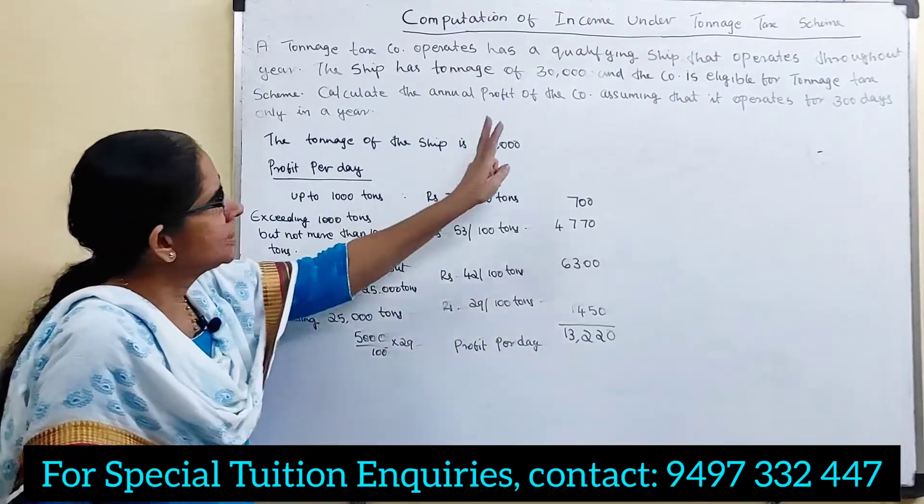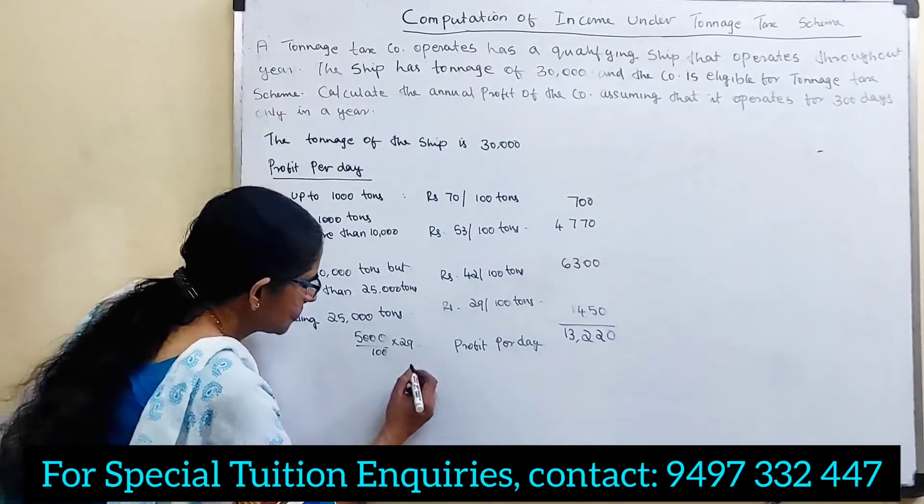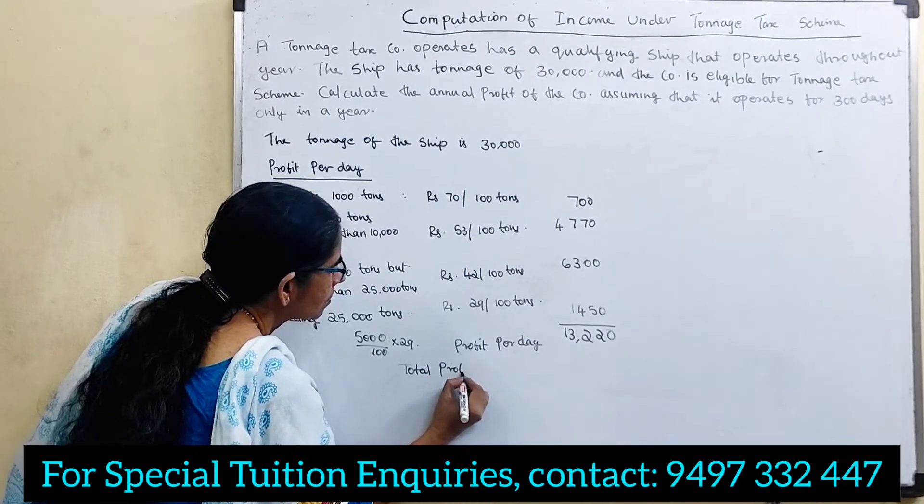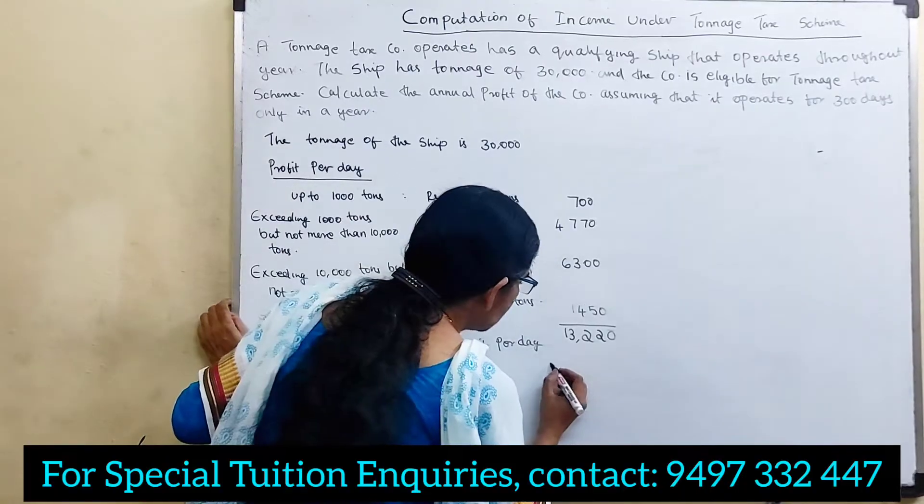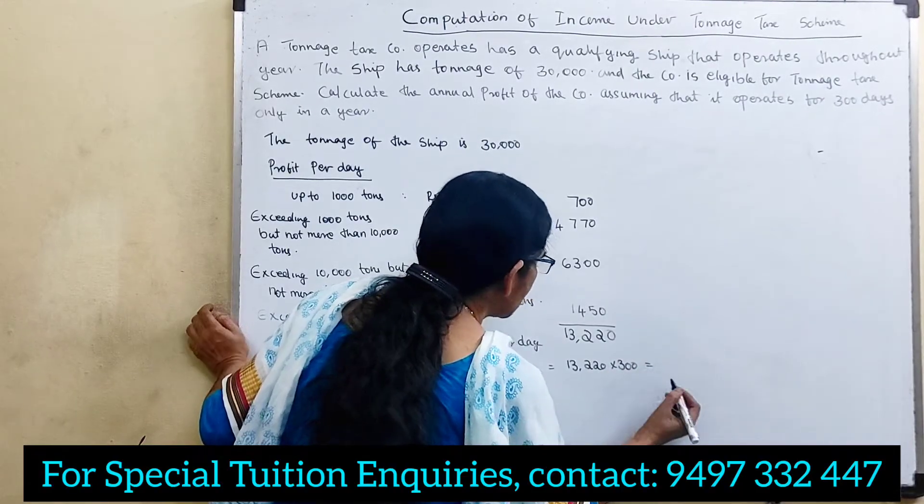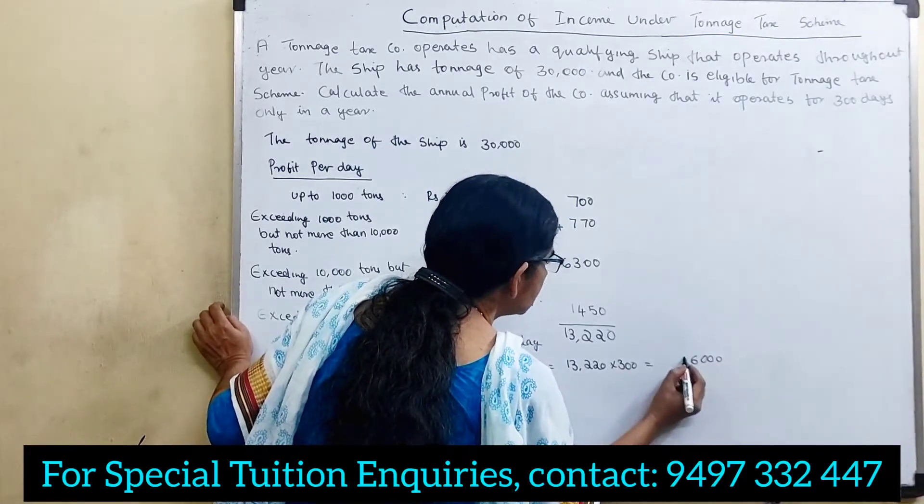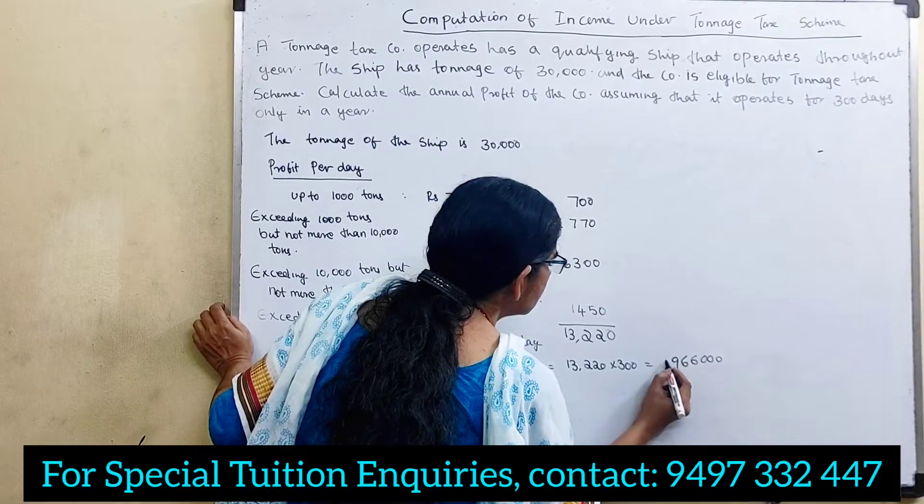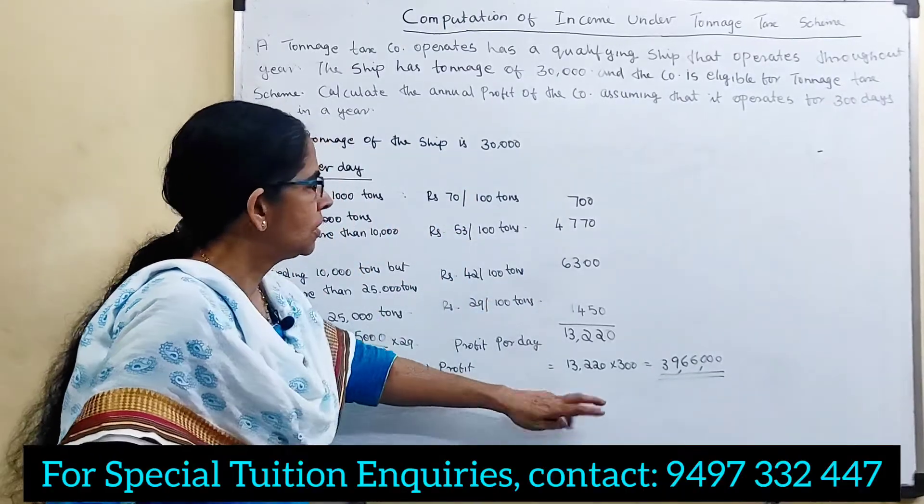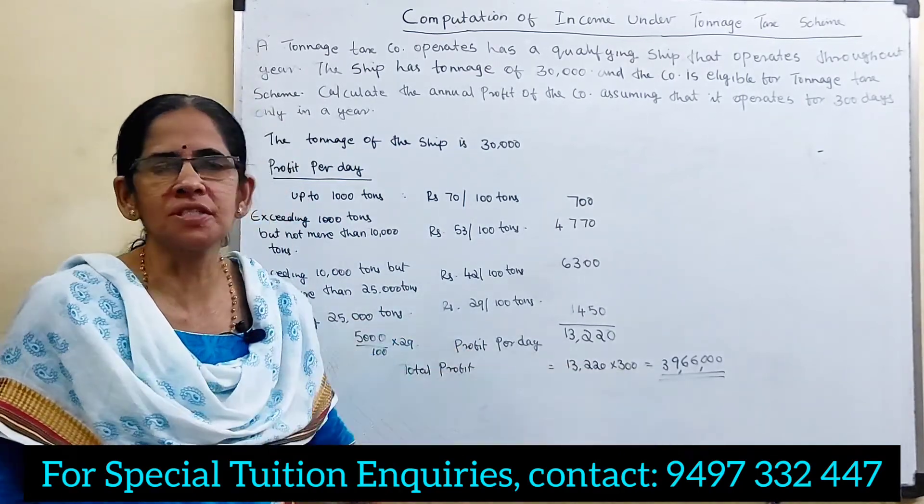Now, what is the total profit? Total profit is equal to 13,220 into 300, that is equal to 39,66,000. That is the total profit.